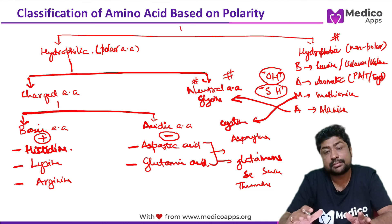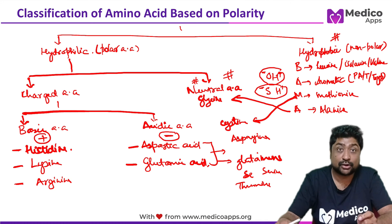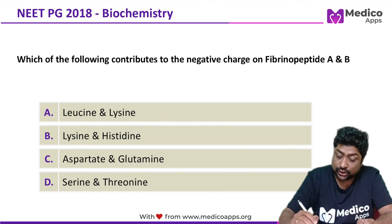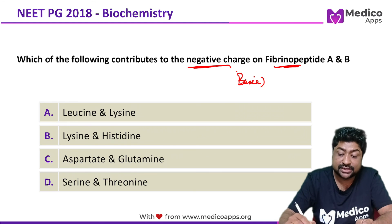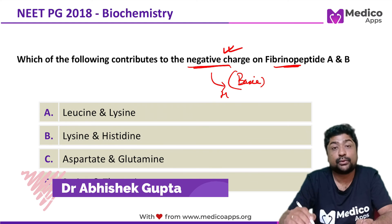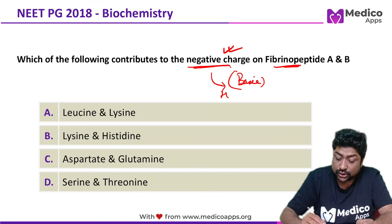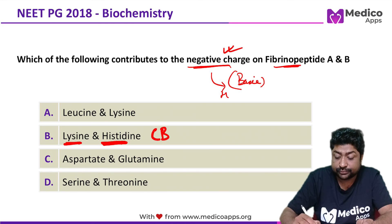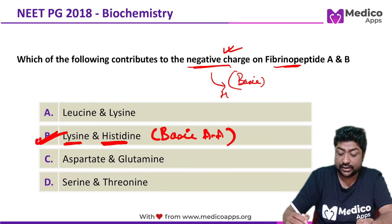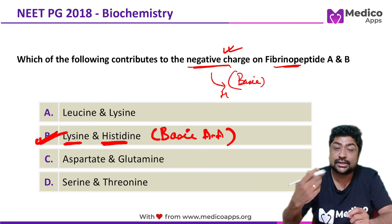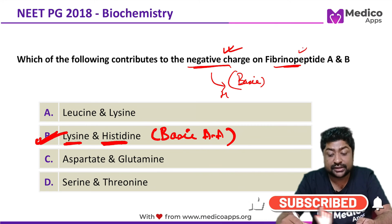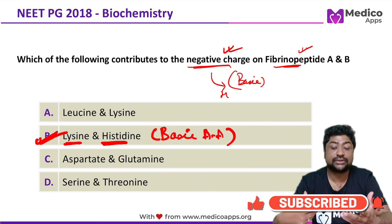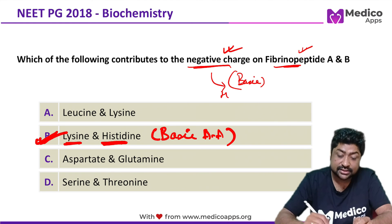Now that we've learned this very important classification, let's answer the question. When talking about a negative charge on a protein, we need basic amino acids — because basic amino acids will accept the hydrogen ion, making the protein negatively charged. Looking at the options, lysine and histidine are both basic amino acids, so the correct answer is B.